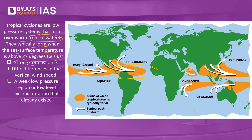Other formation parameters include strong Coriolis force, little differences in vertical wind speed, and a weak low pressure region or low-level cyclonic rotation that already exists. When it comes to cyclones, they are called by different names. They are called hurricanes in the Atlantic Ocean, typhoons in the Pacific Ocean, and cyclones in the Indian Ocean. The characteristics are all the same, but they are called by different names in different parts of the world.